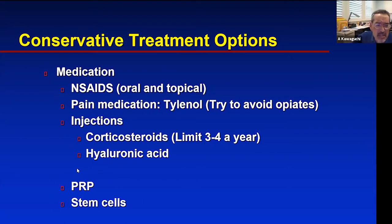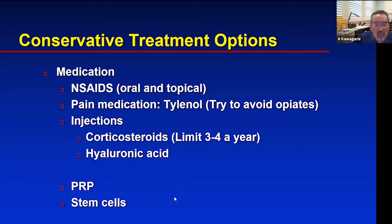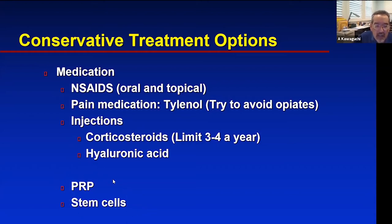The last two entities I'll touch on are PRP — platelet-rich plasma — or stem cells. There's a lot of press about these two treatment options. Unfortunately, although they're FDA approved, there are no good studies on the right dosing or how well they work. Because of that, insurances don't generally pay for these — they're cash-based treatments that some places charge in the thousands. Whether or not they work is still somewhat controversial. The worse your arthritis — bone on bone — the less likely they are to work. For milder arthritis cases, patients may have a better chance.